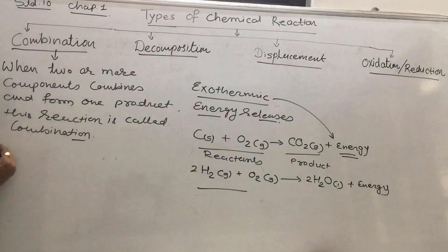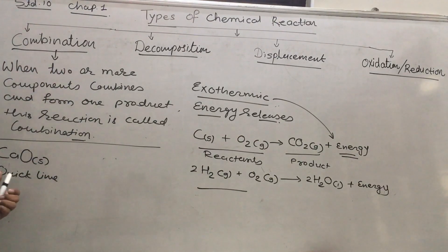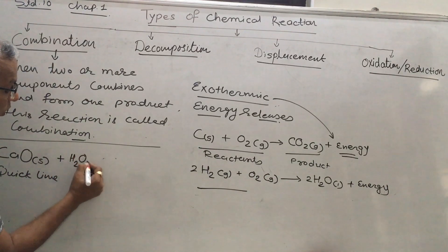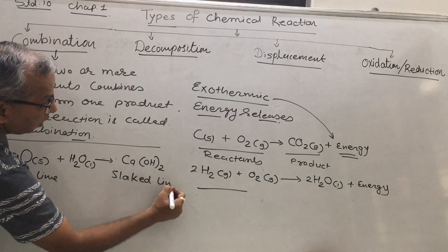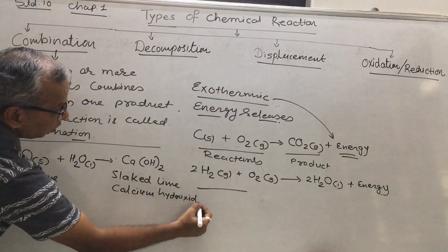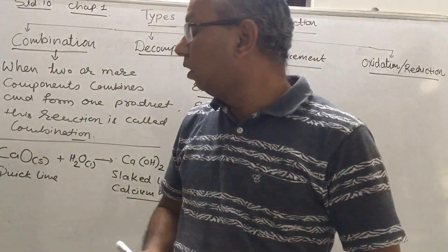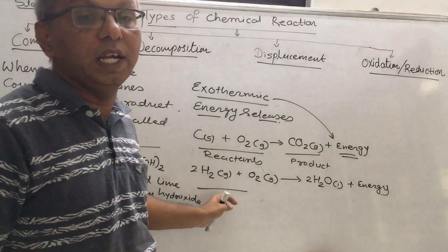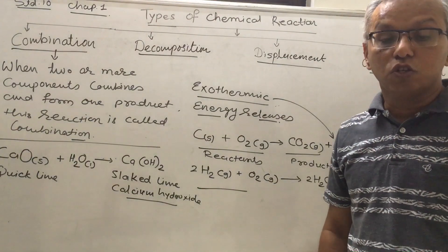One more example: CaO, which is quicklime or calcium oxide, reacts with water H2O to produce Ca(OH)2, which is slaked lime, also known as calcium hydroxide. This is also an example of a combination reaction. So we have seen three examples, and all of them are combination reactions and all are exothermic reactions.